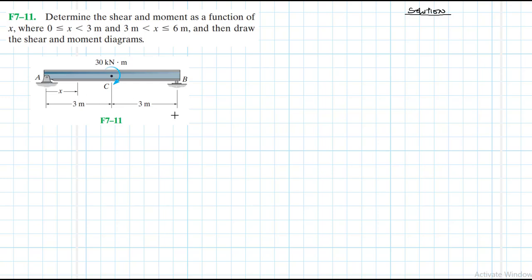We have a simply supported beam and a couple moment applied at C. So first and foremost, let's draw the free body diagram. At A, where we have the hinge, we're going to have Ay and Ax, and at B we are going to have By.